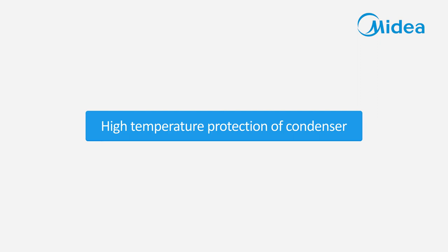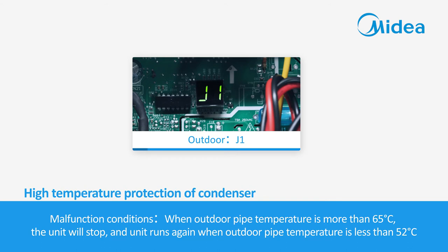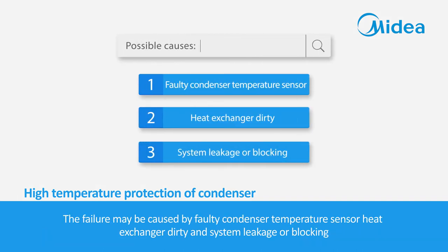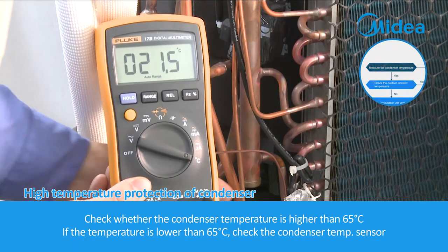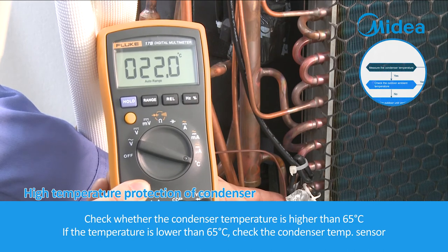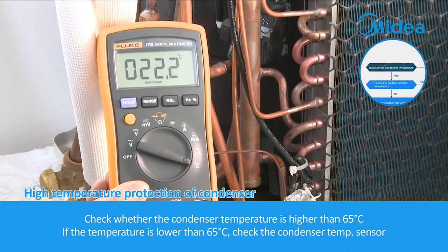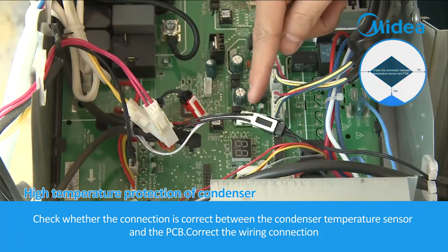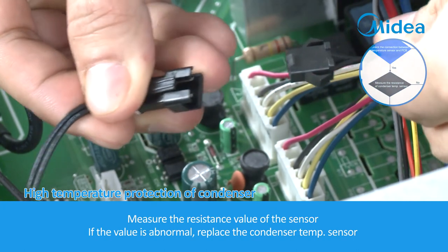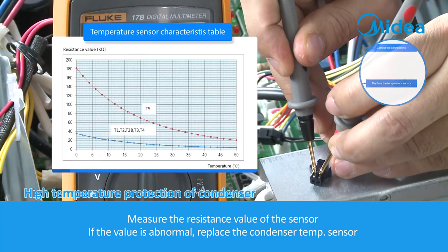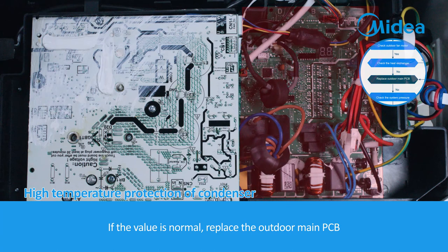High temperature protection of condenser. Malfunction conditions: when the outdoor pipe temperature is more than 65 degrees Celsius, the unit will stop, and runs again when the outdoor pipe temperature is less than 52 degrees Celsius. The failure may be caused by faulty condenser temperature sensor, dirty heat exchanger, or system leakage or blocking. Check whether the condenser temperature is higher than 65 degrees Celsius. If lower, check the condenser temperature sensor connection and correct the wiring. Measure the resistance value; if abnormal, replace the condenser temperature sensor. If normal, replace the outdoor main PCB.